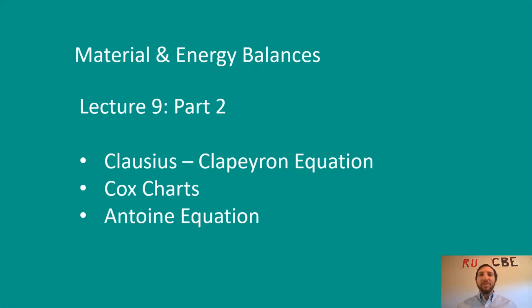Welcome back everyone for Lecture 9 Part 2, where we're going to be talking about different ways to estimate our vapor pressure. We've got three different methods: the Clausius-Clapeyron equation, Cox charts, and the Antoine equation.